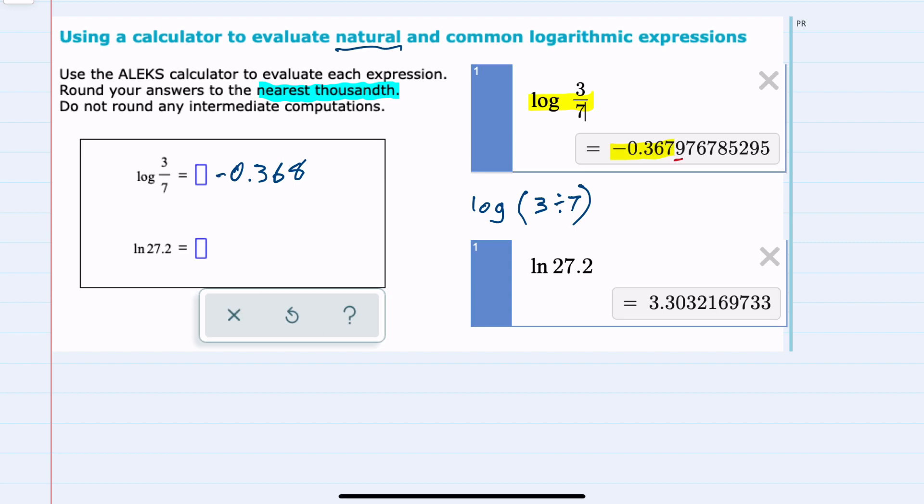Here I just typed in ln, which shows that this is a log base e, and then the 27.2 both gives me the visual and the calculation.